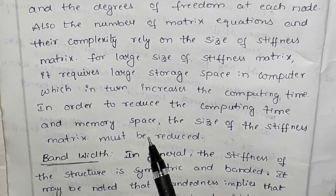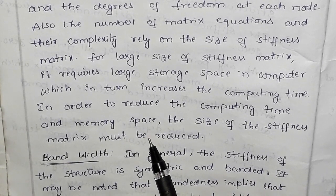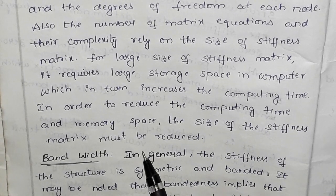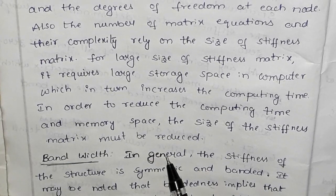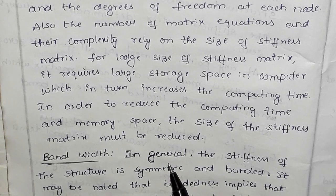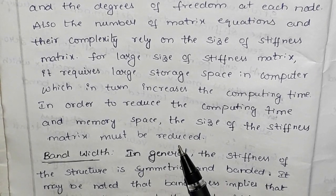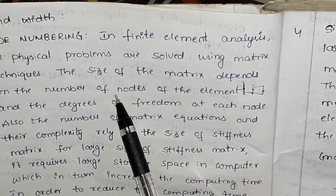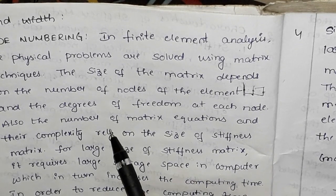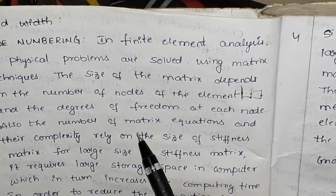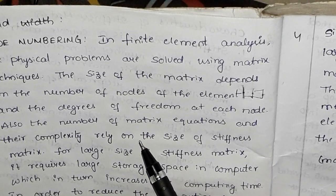We need to reduce the memory space by reducing the size of the stiffness matrix, which in turn reduces the calculating time. To complete node numbering, we consider three factors: number of nodes, degree of freedom, and number of matrix equations. Using these three factors and proper node numbering, we can define and optimize the stiffness matrix.